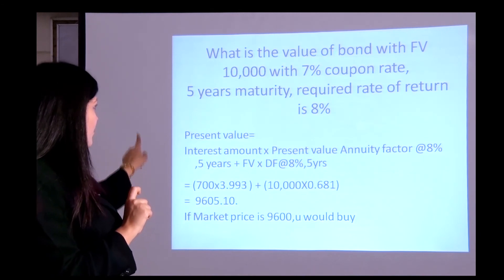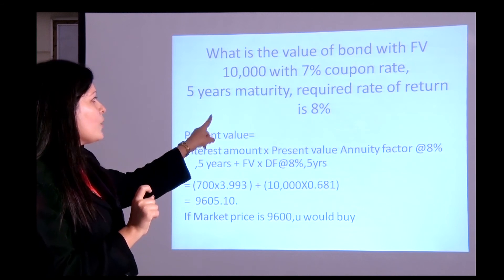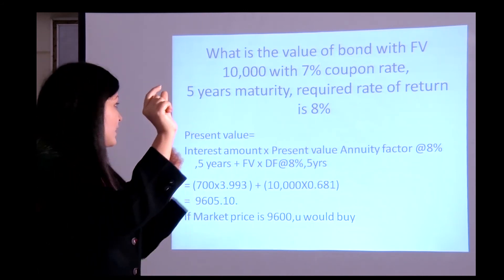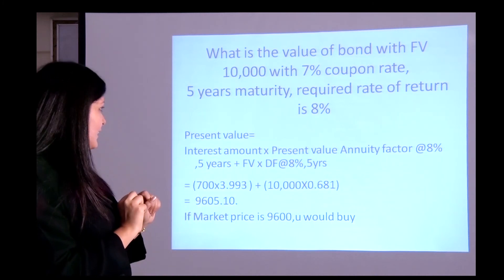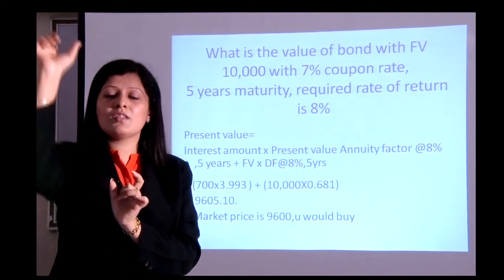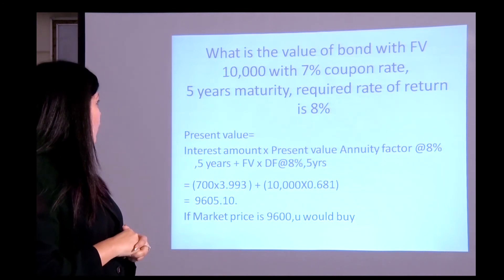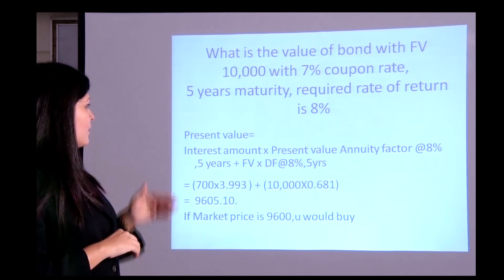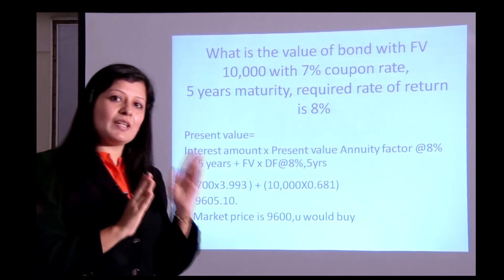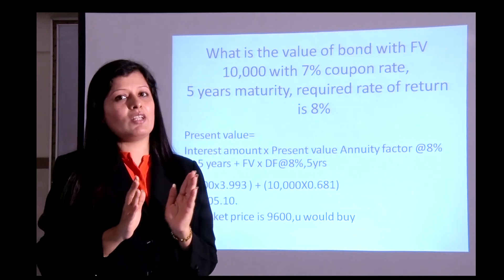Seven percent of 10,000 is 700 — a constant annual cash flow for five years. So: 700 × PVAF (8%, 5 years). From the annuity table at 8% for 5 years, the factor is 3.993. At the end of five years, the face value of 10,000 is received as a single cash flow — discounted using the PV factor at 8% for 5 years. The total present value of this bond is 9,605.10. If the market price is 9,600, you would buy it because the true value is 9,605.